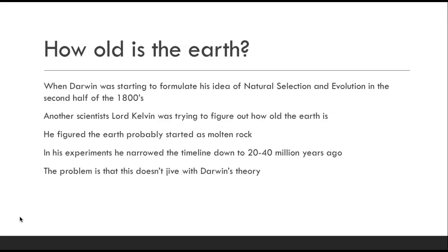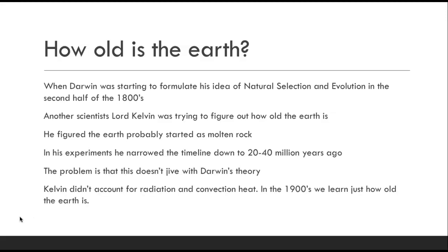The problem is that doesn't jive with Darwin's theory of natural selection and evolution. It takes much, much longer than a few million years for this amount of evolution to have occurred. Once you start getting multiple scientists working together and postulating different theories, you have to put them together to see if they work — and this clearly does not work. We know now that Kelvin didn't account for things like radiation and convection heat, so it won't be until the 1900s when we actually learn just how old the Earth is.